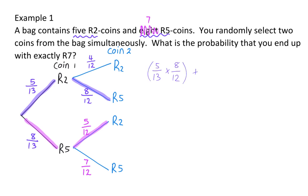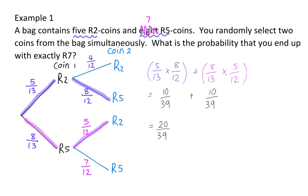But we also have the option of a five-rand, which is eight out of thirteen, and then a two-rand, which is five out of twelve. So each route's probabilities have to be multiplied, and the different routes have to be added up. The probability to end up with exactly seven rand is twenty out of thirty-nine, which can also be written as a decimal of 0.51 or a percentage of 51%.